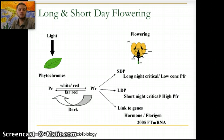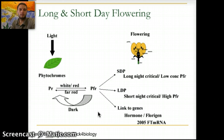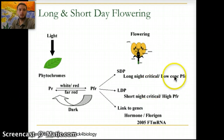Short-day flowering plants flower only if the period of darkness is longer than a specific critical length. If the darkness is interrupted by a brief period of light, the plant will not flower, but this can be reversed by a flash of far-red light. The PFR portion of the pigment inhibits flowering in short-day plants. Long nights are necessary for short-day plants because it allows the concentration of PFR to fall to a low level, removing the inhibition.